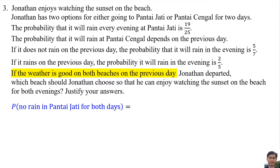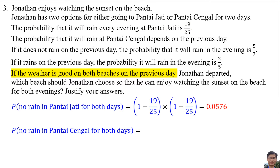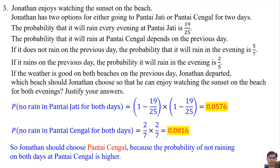If the weather is good on both beaches on the previous day, the probability of no rain at Pantai Jati for both days is (1 minus 19 over 25) times (1 minus 19 over 25), which equals 0.0576. For the other beach, if it does not rain, the probability of no rain is 2 over 7, so 2 over 7 times 2 over 7 equals 0.0816. Comparing both probabilities, Jonathan should choose Pantai Jati because the probability of no rain on both days there is higher.